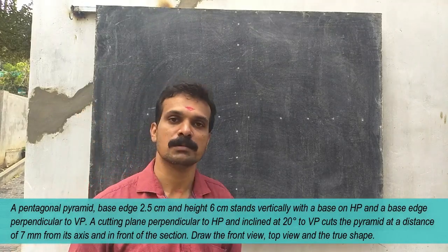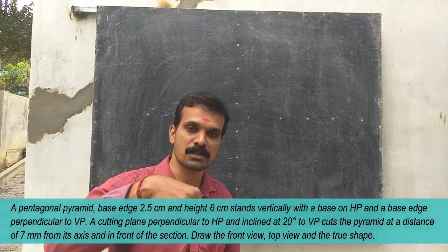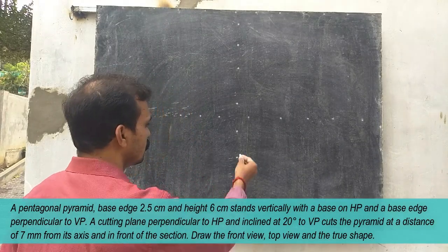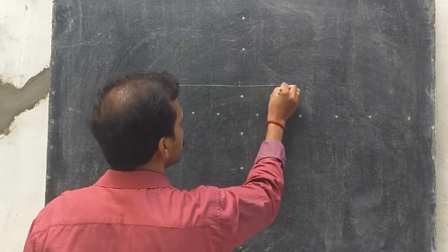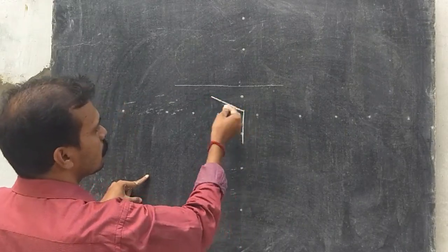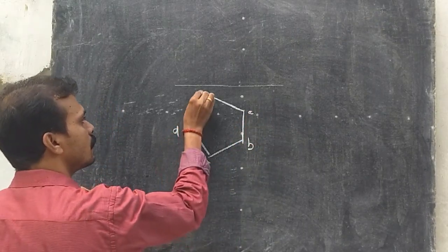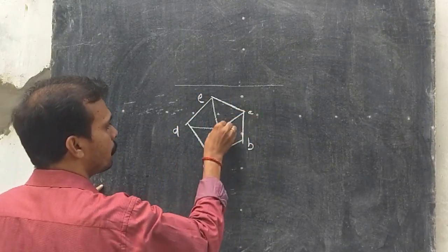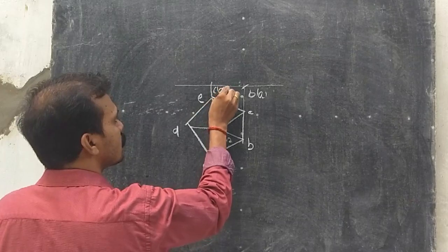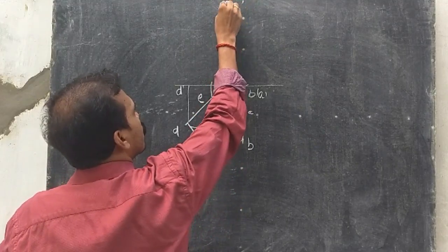This is a pentagonal pyramid placed on the ground with one of its base edges perpendicular to VP, so the base edge should be on the right side. This is the XY line. The base points are A, B, C, D, E and the apex O. In the front view: A dash, B dash, C dash, D dash, E dash, O dash.